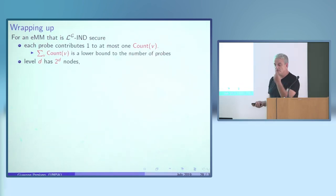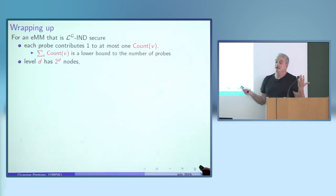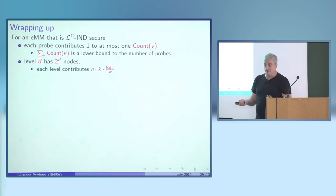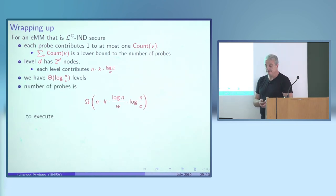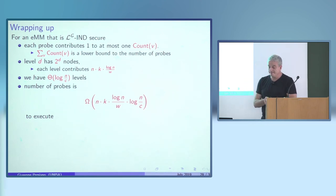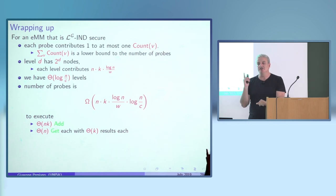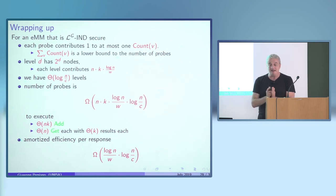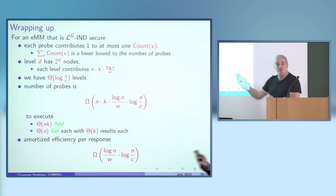Each probe contributes one to at most one count, so the sum of counts is a lower bound on probes. At depth d there are 2^d nodes, each contributing n·k·log(n)/w. We have log(n)/c levels, giving a total lower bound. This is to execute n·k add operations and n get operations, where each get returns k elements, so total responses are Theta(n·k), and the amortized cost per response is at least log n — the promised lower bound.